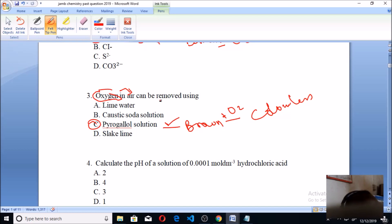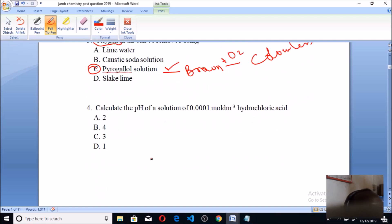Question four: Calculate the pH of a solution of 0.001 molar per dm cubed hydrochloric acid. This is very simple. We first get the concentration of hydrochloric acid, which is 0.001 molar per dm cubed. If you convert this to standard form, you get 1 × 10^-3 dm cubed.